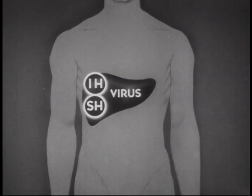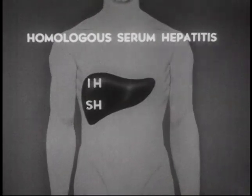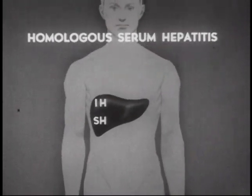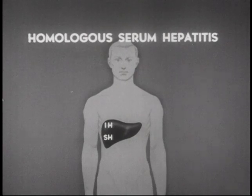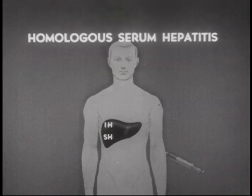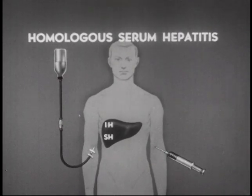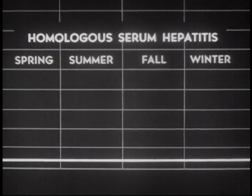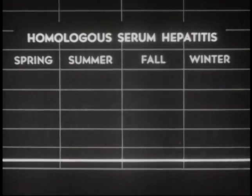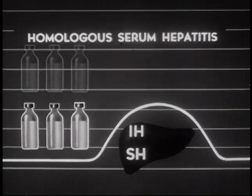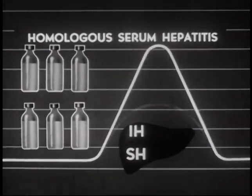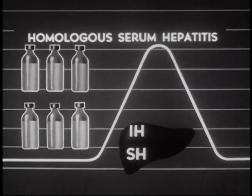Both the IH and the SH virus may cause homologous serum hepatitis. The SH virus is the more common etiologic agent. Infection is due to the presence of these viruses in needles, syringes, and blood products. There is no seasonal variation. Periods of increased use of blood and blood products cause peaks of incidence. The two viruses cause essentially the same clinical and pathologic pictures with one major difference.